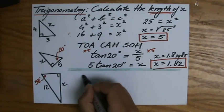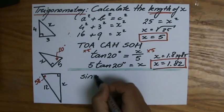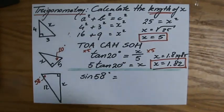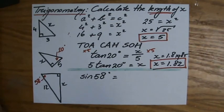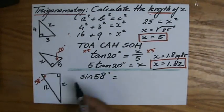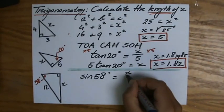So, I write down the sine of 58 degrees equals, the sine, that ratio, immediately followed by the angle. In this case, 58. Opposite, which is x over 12.